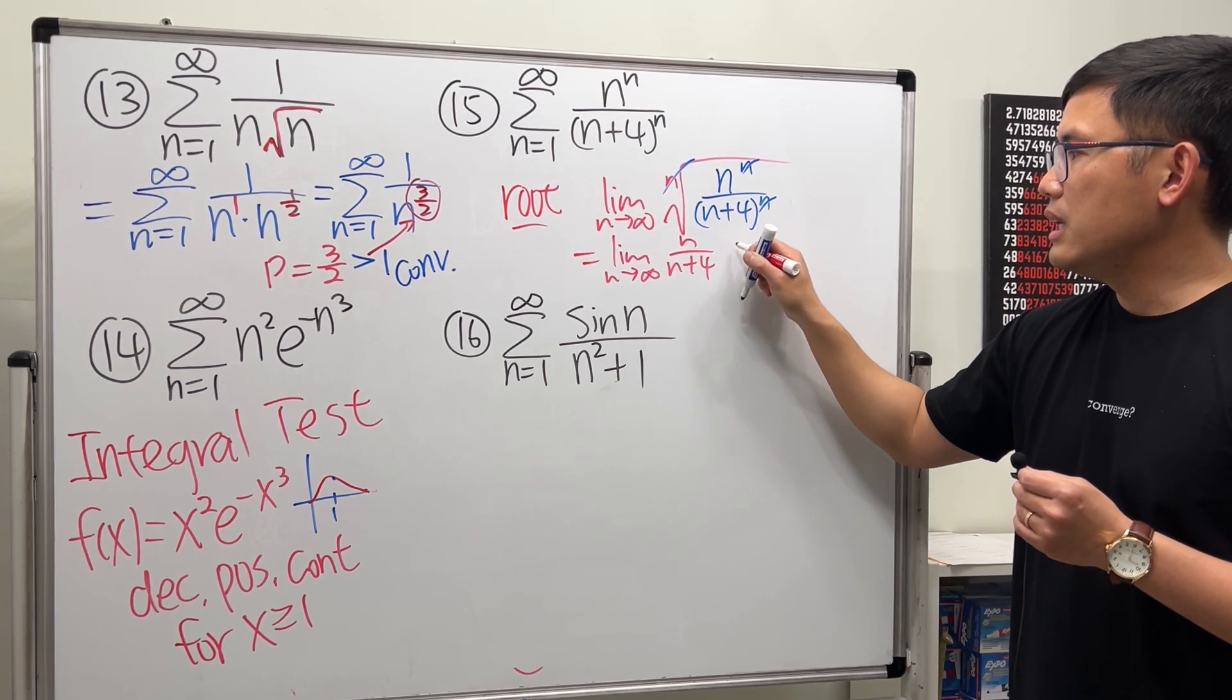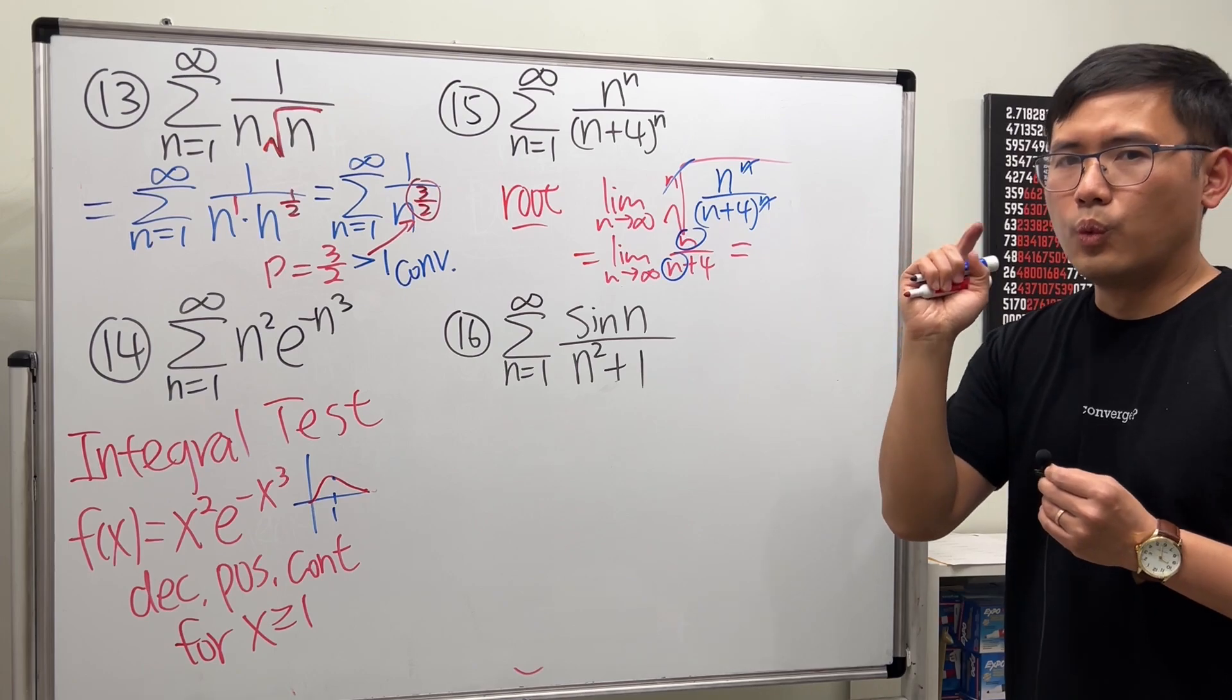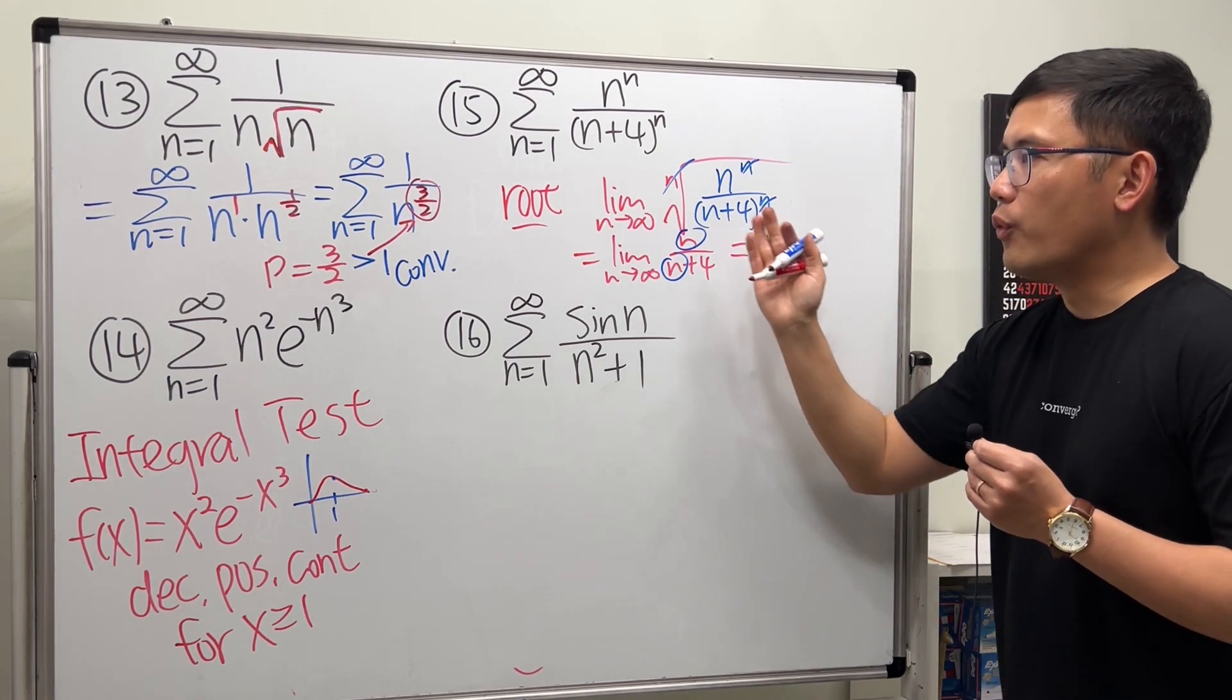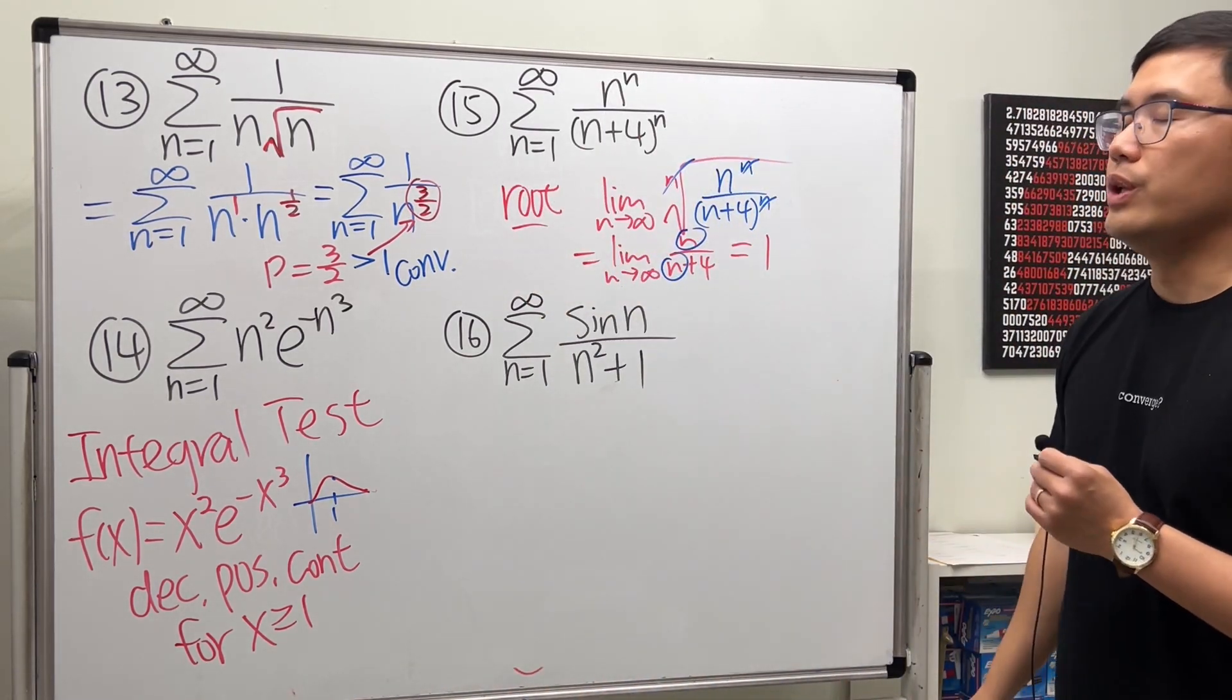n over n plus 4. This gives us 1. 1 is not good for root tests. So, what do we do for this?